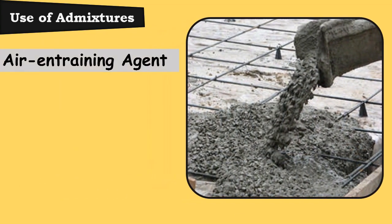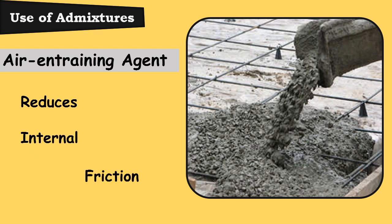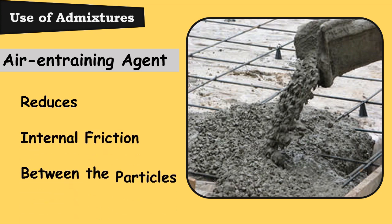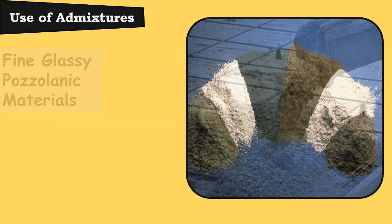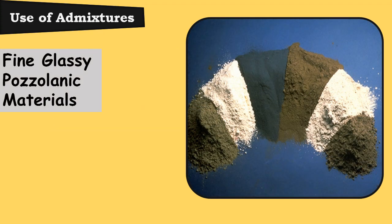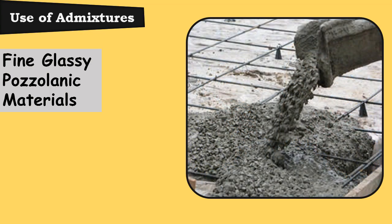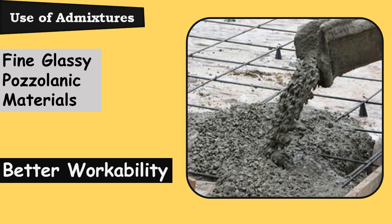Use of air-entraining agent, being surface active, reduces the internal friction between the particles. The air bubbles act as a sort of ball bearing between the particles to slide past each other and give easy mobility to the particles. Similarly, the use of fine glassy pozzolanic materials increases the surface area and offers better lubricating effects for providing better workability.